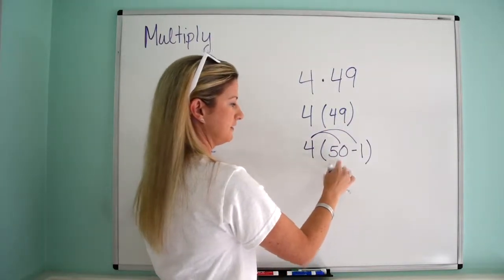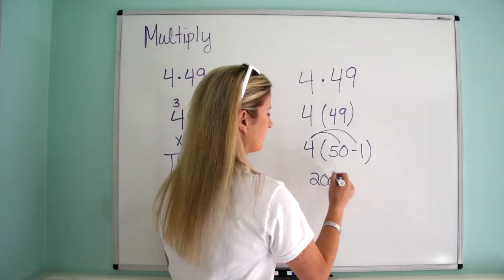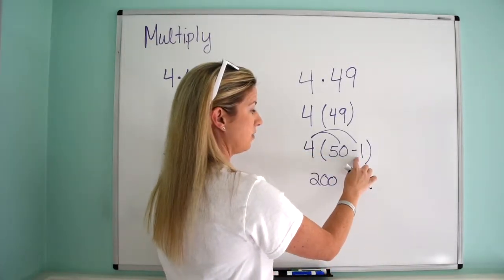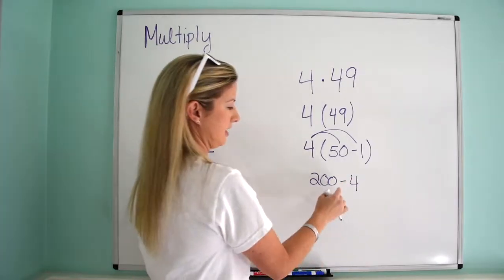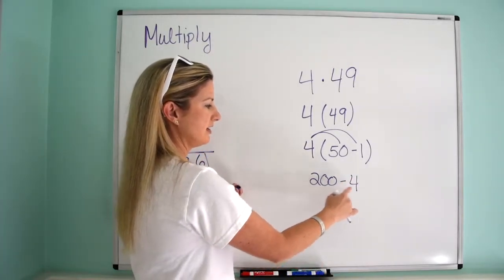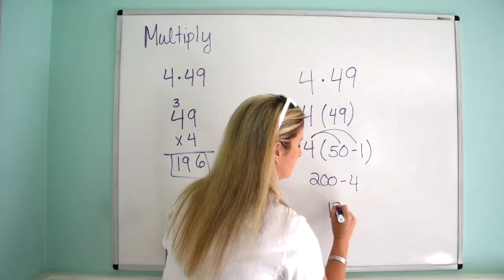Okay, so now I'm just going to distribute. 4 times 50 is 200. 4 times negative 1 is negative 4. So then we have 200 minus 4, which is 196.